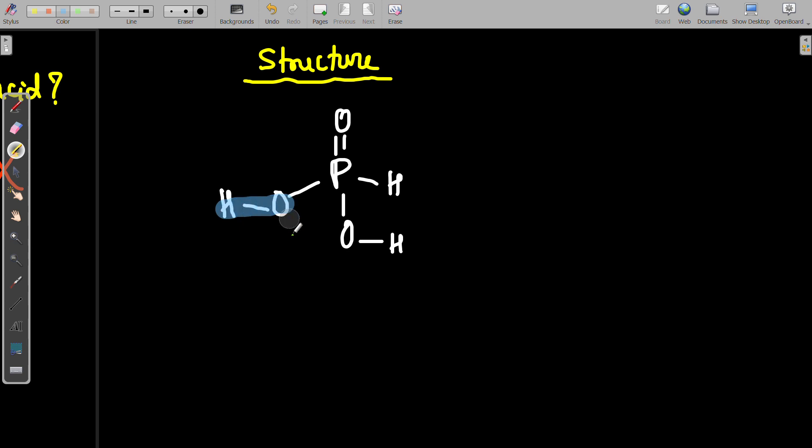Here, this hydrogen attached to oxygen and this hydrogen attached to oxygen, they are replaceable or ionizable. This and this, but the hydrogen attached to phosphorus directly, this one is not replaceable.